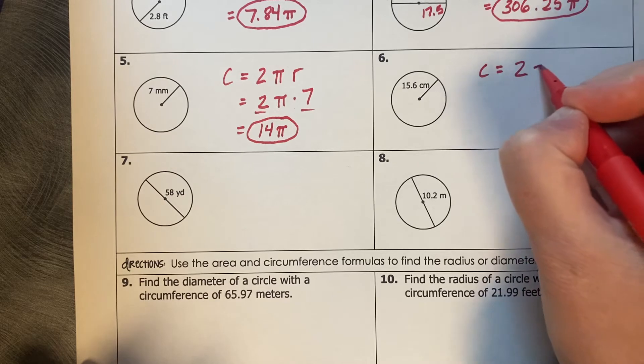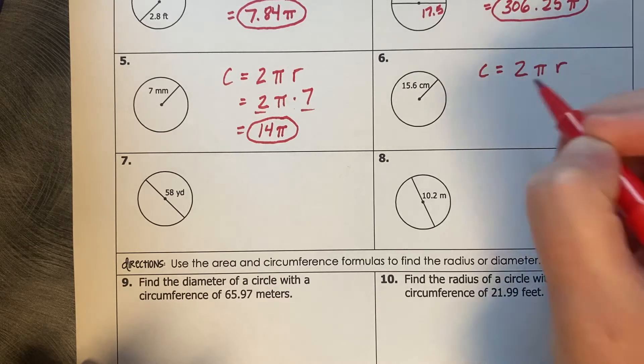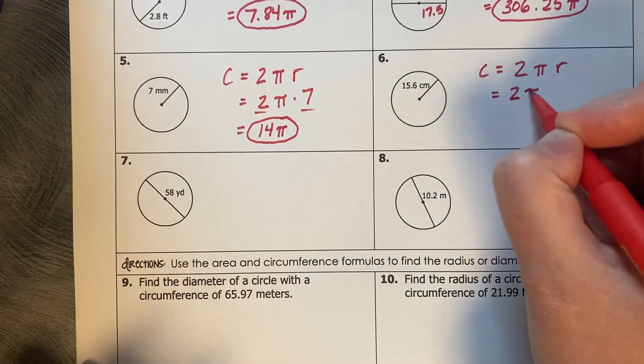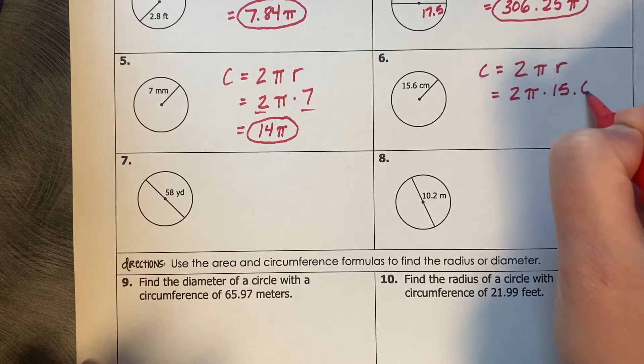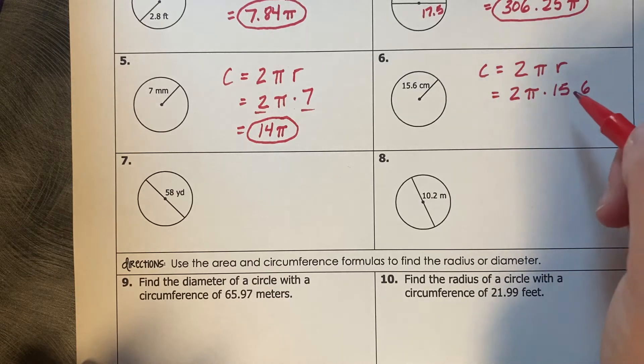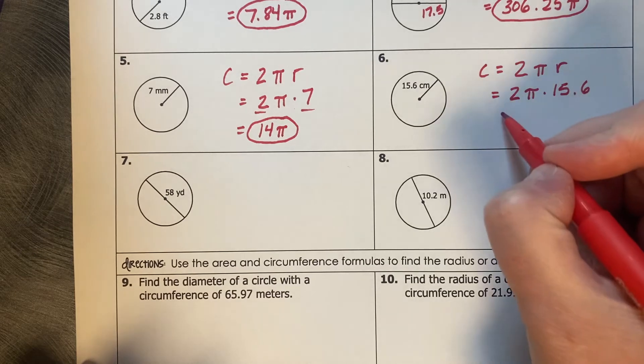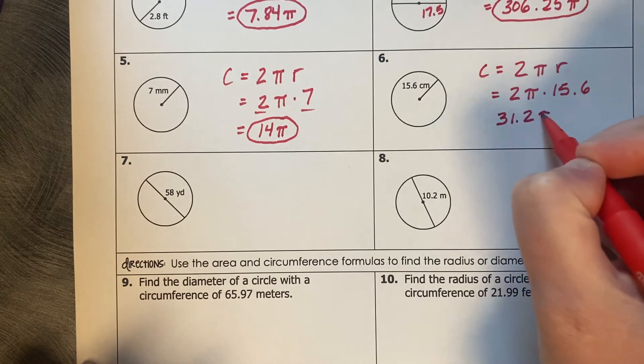2 times pi times r. 2 times 15.6 is 31.2 pi.